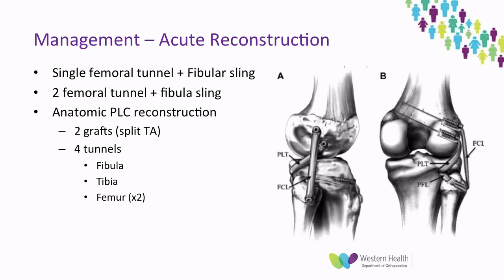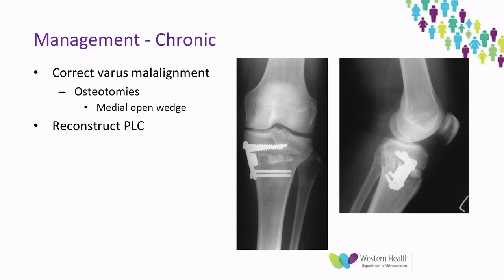The advantage of this technique is that it essentially recreates the normal anatomy of the posterolateral corner. For chronic posterolateral corner injuries, long-leg alignment X-rays are important to determine whether there is varus malalignment. Often the first step is to correct this by performing a medial open-wedge high tibial osteotomy, and this may be enough to correct the patient's instability. However, if inadequate, a second-stage reconstruction may be performed.